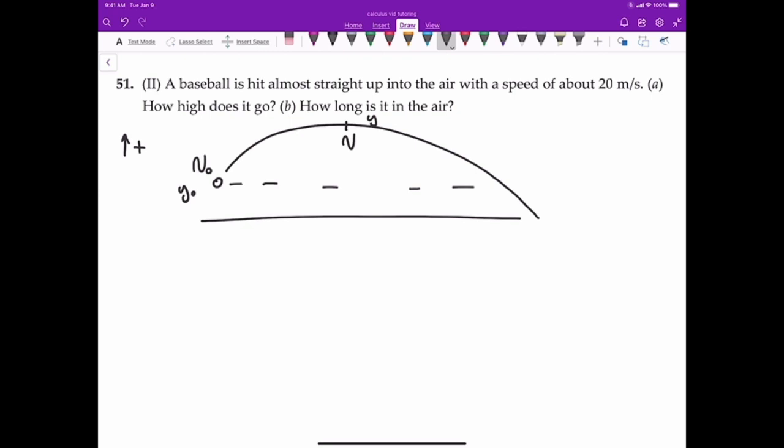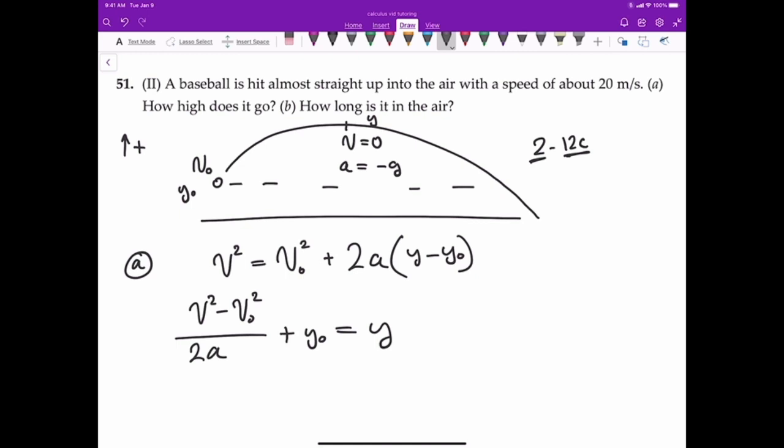Because we chose up as positive, we'd like to find the displacement, and that displacement can be found by using equation 12c from the book. So v² (final velocity) equals v₀² (initial velocity squared) plus 2 times the acceleration times the change in distance. So this will be final distance minus initial distance. We have the initial velocity, final velocity equals zero, we have the acceleration. So now let's solve for the final distance. That's the distance on the top of the curve. How high does it go?